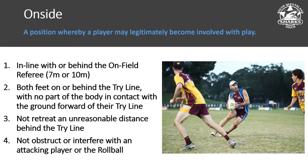On the try line, the player must get both feet on or behind the try line — not just one — and have no part of the body in contact with the ground forward of the try line. They cannot crouch down with their arms forward ready to sprint out, and unlike league, they must have two feet on or behind the try line.